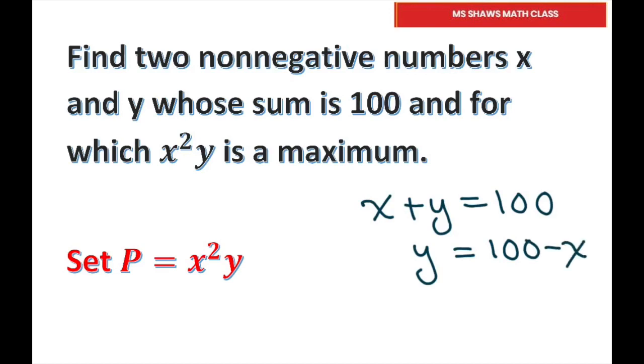Then if you do that, you can substitute P equals x squared times y, which is 100 minus x. So we're going to solve for x here, and then we can find y. If you distribute, you get 100x squared minus x cubed.